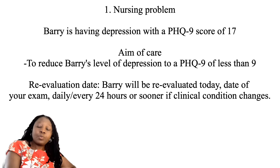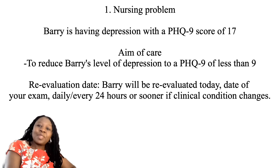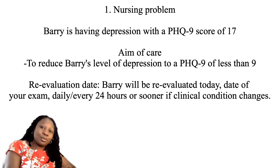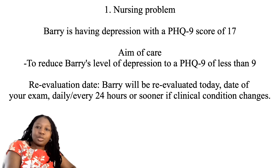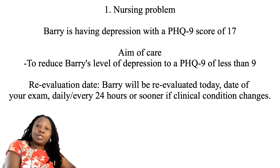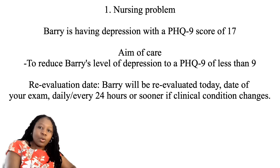The first nursing problem I'm going to go for is: Barry is having depression with a PHQ-9 score of 17. The aim of care is to reduce Barry's level of depression to at least a PHQ-9 score of less than nine. The re-evaluation date is going to be today — the date of your exam — every 24 hours, or daily, or sooner if clinical condition changes.